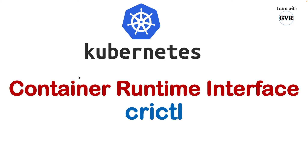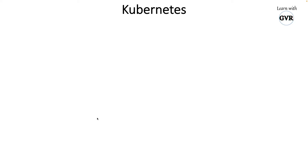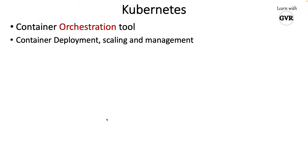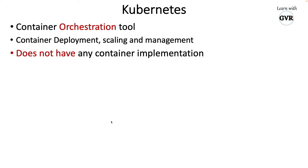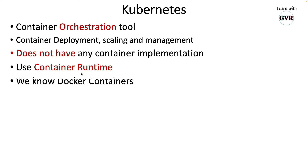Kubernetes container runtime interface — crictl. If you Google Kubernetes, it will tell you it's a container orchestration tool, which is nothing but container deployment, container scaling, management, security, governance, etc. Kubernetes works like an agent; it does not have any implementation of containers. It uses an internal container runtime. Since day one, container meant Docker — Docker meant container runtime — that was the only one everybody knew.